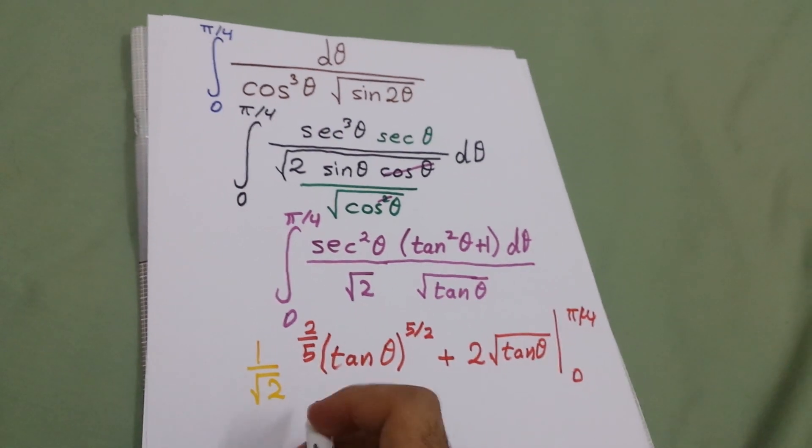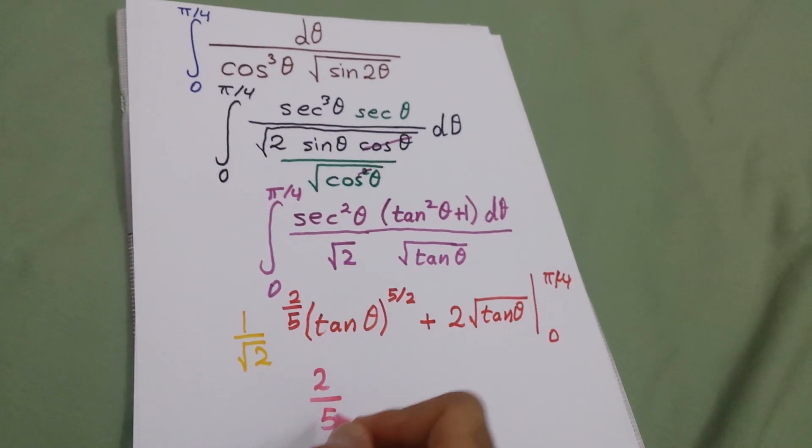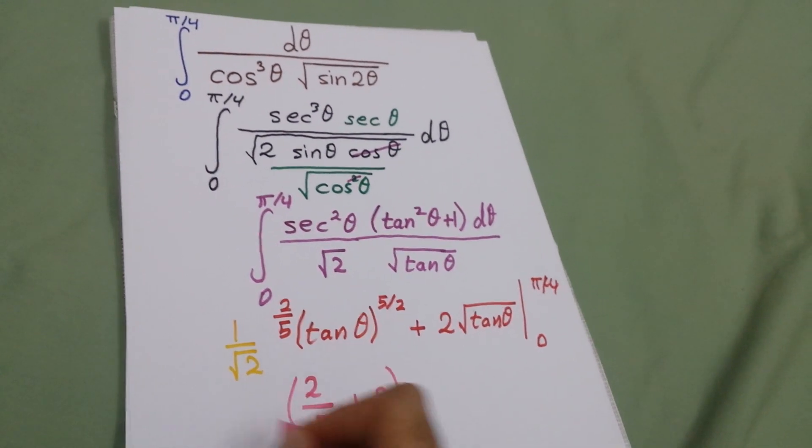When we substitute π over 4, the tan of π over 4 is just 1.